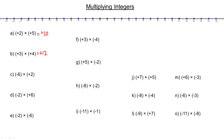Next one: negative 6 times 2. Negative 6 means I've gone in a negative 6 direction, and I'm doing that two times, so another negative 6 takes me further — 1, 2, 3, 4, 5, 6 and 1, 2, 3, 4, 5, 6 in the negative direction — so that would multiply to negative 12.